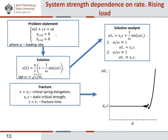First, let's look at the rising load problem. For such a simple system, we can easily solve the motion equation and obtain the dependence of the mass position on time. This solution can be analyzed using a very simple fracture condition: the spring breaks when the critical elongation xc is reached. For different loading rates alpha, we can calculate corresponding critical load force values at the fracture moment. It appears that for lower loading rates, the critical force equals the static critical force at the fracture time. But for high loading rates, the critical force significantly exceeds the static critical value, providing a so-called dynamic branch of the strength-rate dependency curve.